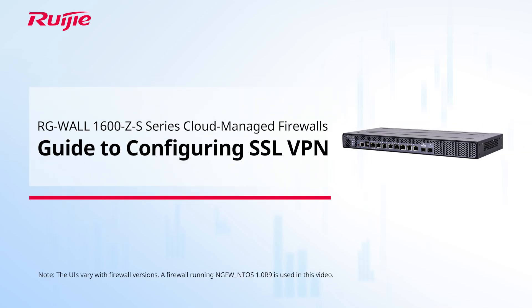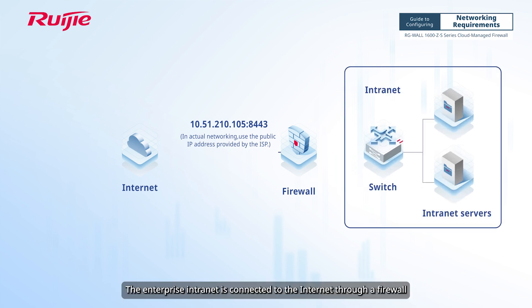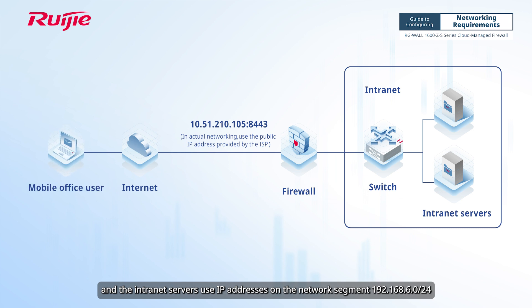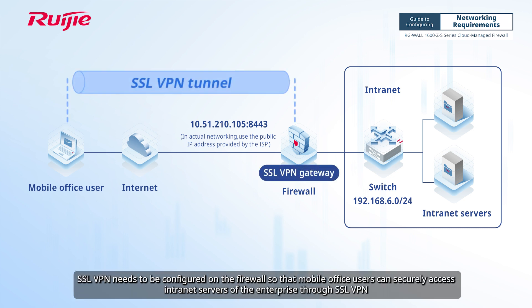This video introduces how to configure SSL VPN on the RGWall 1600 ZS-Series cloud-managed firewalls to enable mobile office users to remotely access internal resources of enterprises. The enterprise intranet is connected to the internet through a firewall, and the intranet servers use IP addresses on the network segment 192.168.6.0/24. SSL VPN needs to be configured on the firewall so that mobile office users can securely access intranet servers of the enterprise through SSL VPN.